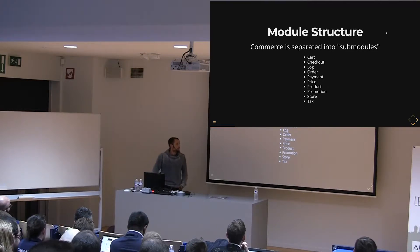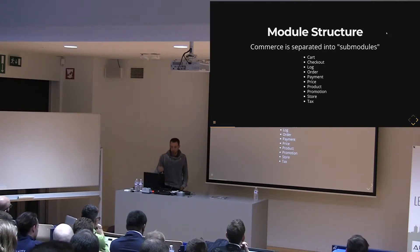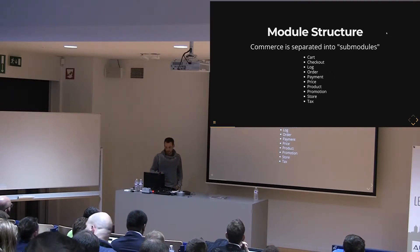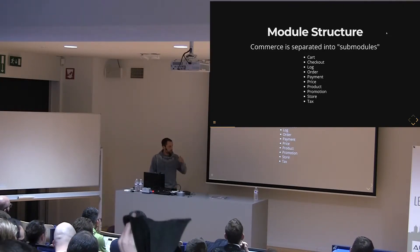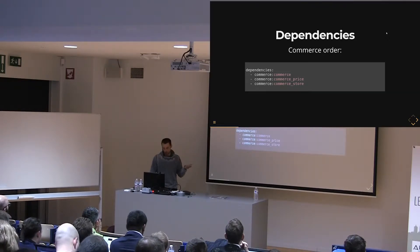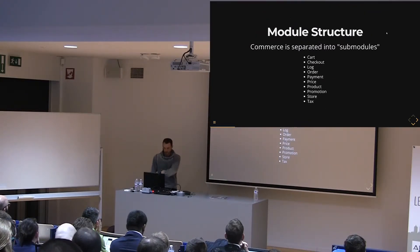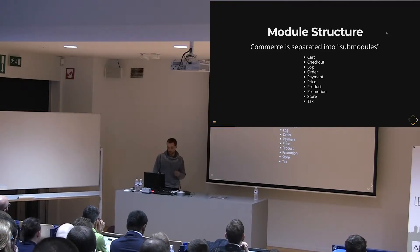The module structure of commerce: you have the base commerce module which doesn't do a lot — it provides some base classes and a framework for all the submodules to work with. You'll be installing a lot of these submodules when you configure your sites. A lot of modules are dependent on each other. For example, if you install the order module you also have to install base commerce, the store module, and the price module. Most of the time almost all these modules will be enabled except for promotion and tax, which are optional if you don't need them.